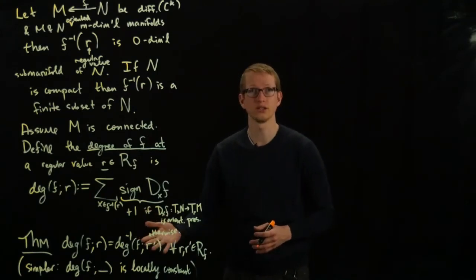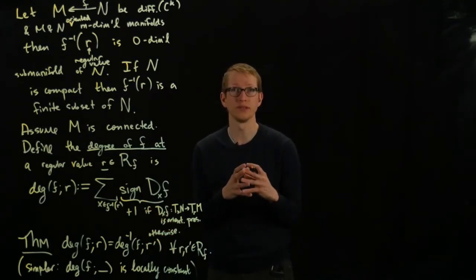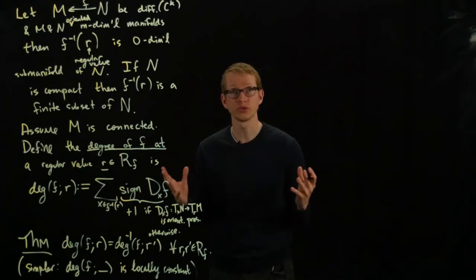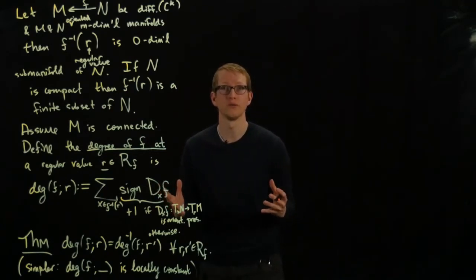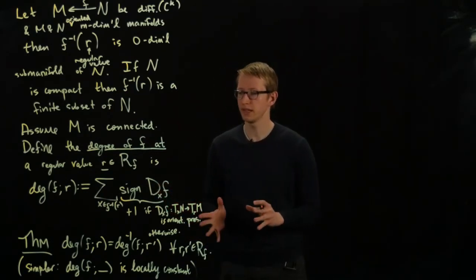And what this means is that if I have any regular value here, then what I can do is there exists an open set around that regular value on which this function is constant. This is a much stronger condition. It says that I can take all of these open sets, piece them together, and you'll still get a constant function overall.